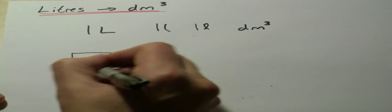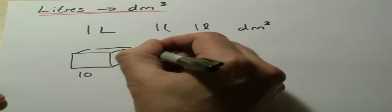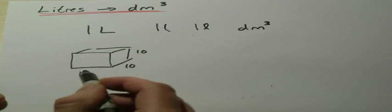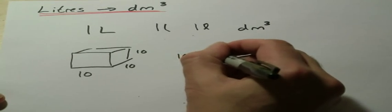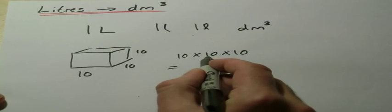Now what does that mean? Well, a decimeter is 10 centimeters, so if you imagine a cube that was 10 by 10 by 10, 10 times 10 times 10...